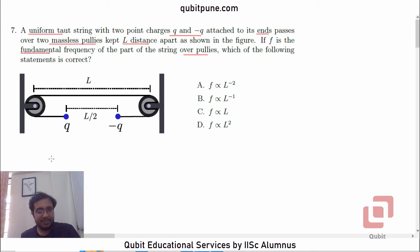As can be seen here, these are the two pulleys. This is the first one, this is the second one. And the string is this. As they have said, at the ends of the string, we have two charges, plus Q and minus Q, and they are separated by a distance of L by 2.